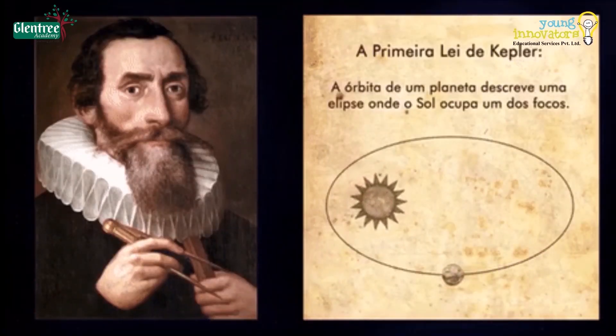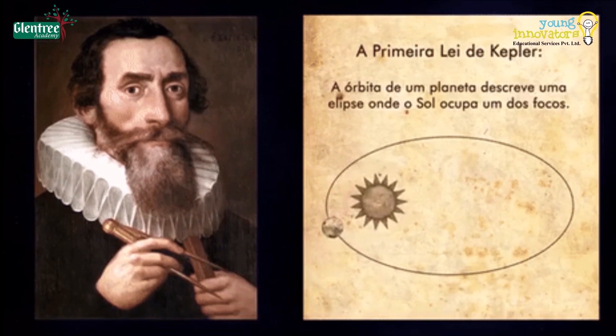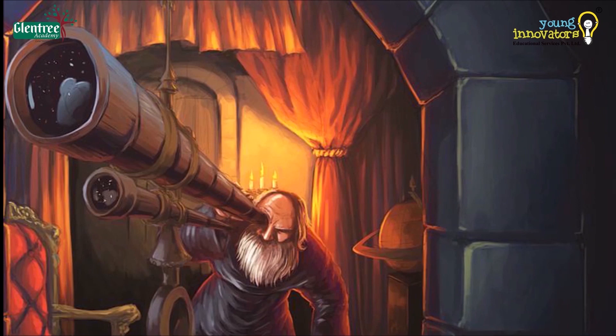However, many people and the priests were reluctant to accept this theory as it was against the religious beliefs and also there was no instrument which could help us see the objects go around sun.